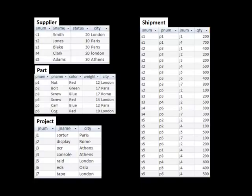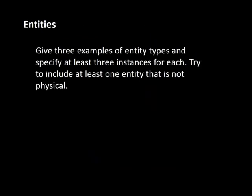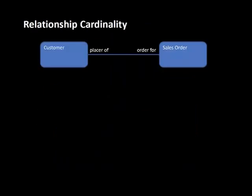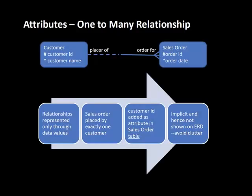This is just like the first schema shown earlier — a shipment can be made by only one supplier, and we indicate who the supplier is by putting the supplier number (the primary key of the supplier table) in the shipment. That's exactly what we're saying here: a sales order is placed by exactly one customer, so we put the customer's ID inside sales order.